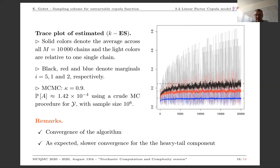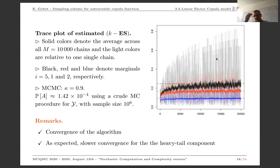Looking at the plots: the black curve corresponds to the heavy-tailed component, and the red and blue curves correspond to light-tailed components. The estimation for the heavy-tailed component is much noisier, illustrating that convergence occurs but is much slower than for the other components. The lighter-color plots correspond to several replicas of the algorithm, showing the variance of the estimator. In the heavy-tail case there is much more variability, as expected. In any case, the algorithm is converging.